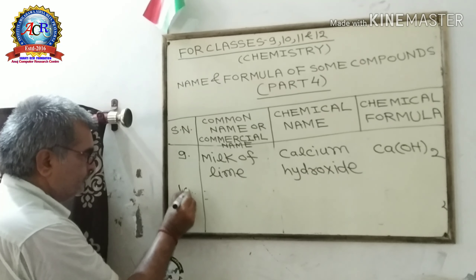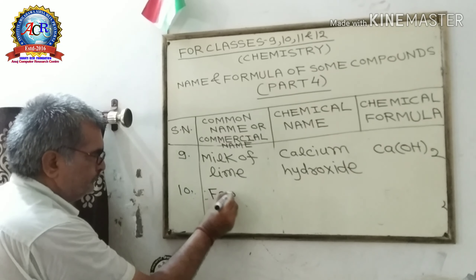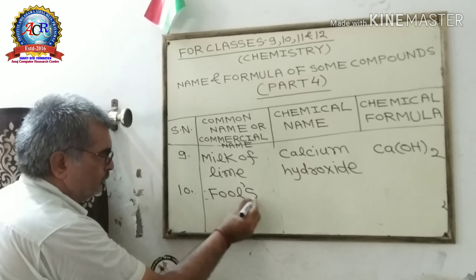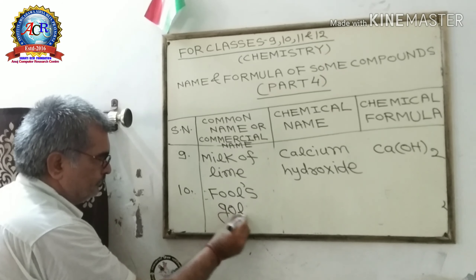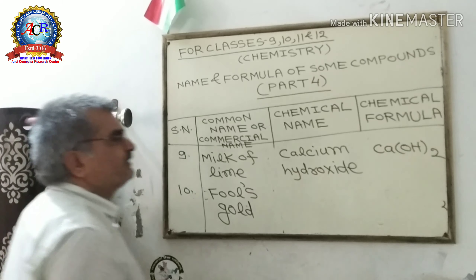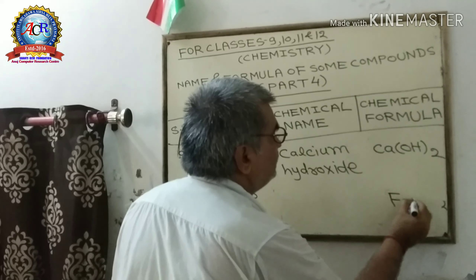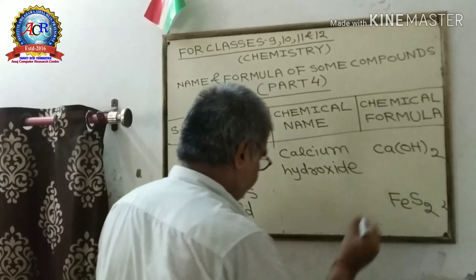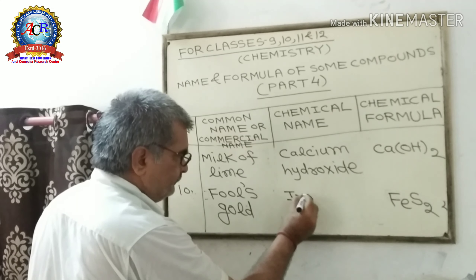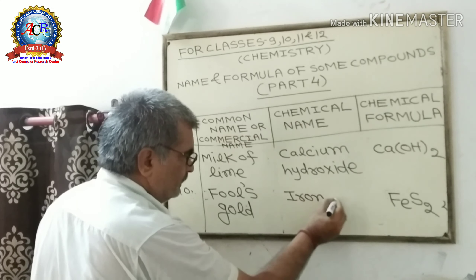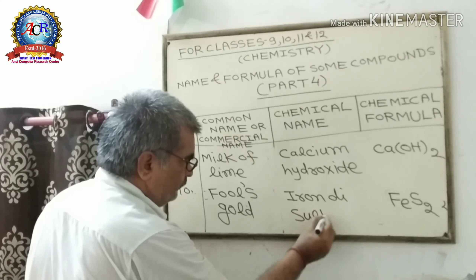Tenth: Fool's Gold. Its formula is FeS₂. Its chemical name is Iron Disulphide.